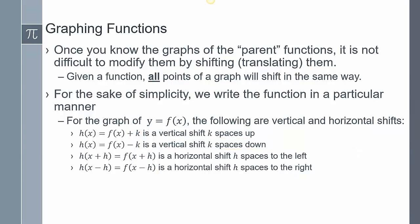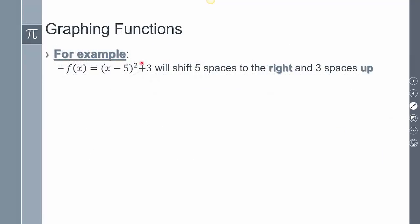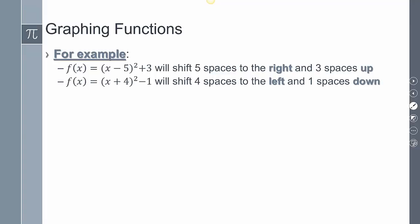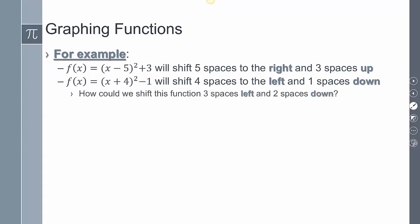To piece this together — if I had x minus 5 squared plus 3, this shifts 5 spaces to the right and 3 spaces up. Do the opposite for the inside, so 5 to the right; do the same for the outside, 3 spaces up. For x plus 4 squared minus 1, that moves 4 spaces to the left and 1 space down. If I wanted to take x plus 4 squared minus 1 and shift it 3 more spaces to the left and 2 more spaces down, I'd transform it into x plus 7 squared minus 3.